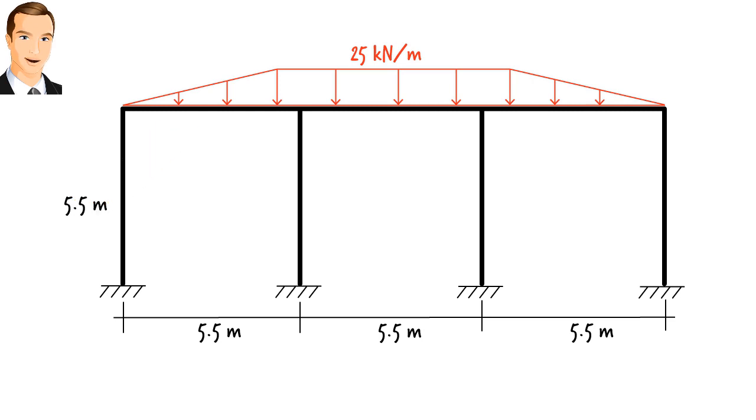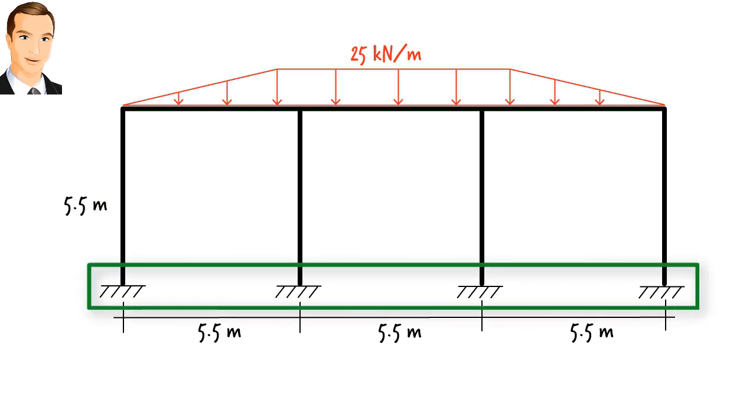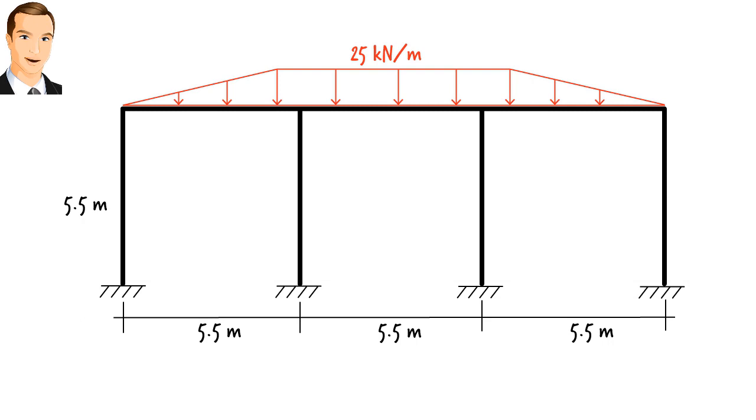Since the columns are embedded in concrete blocks, we consider them to be fixed at the base. The rigid connection made between the steel member and the concrete prevents rotation at the base of the column. We are going to assume that all members in the frame have the same section and material properties. So, we have a constant EI throughout the structure.